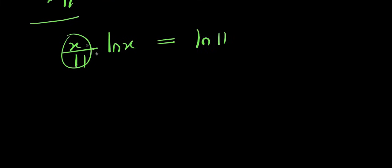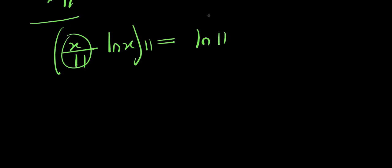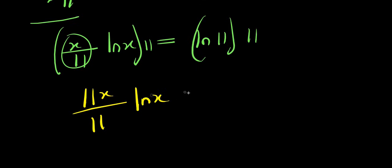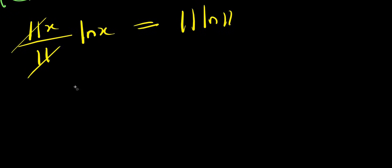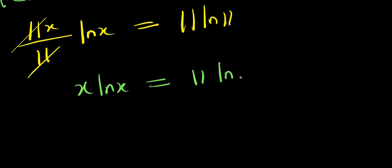We have a fraction here. To eliminate it, we multiply both sides of this equation by 11. This gives us 11 times x over 11 times ln x equals 11 times ln 11, which simplifies to x times ln x equals 11 times ln 11.